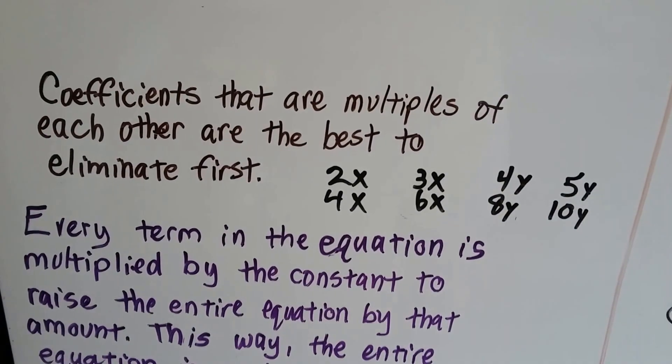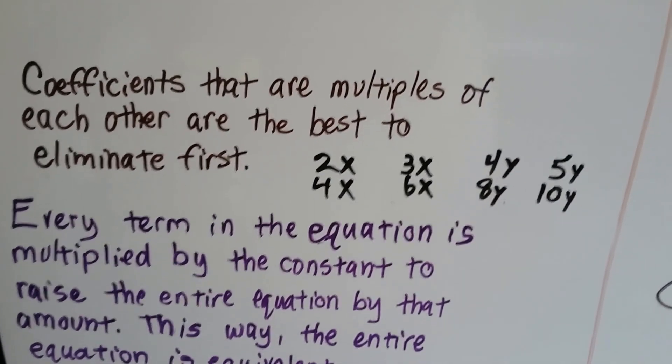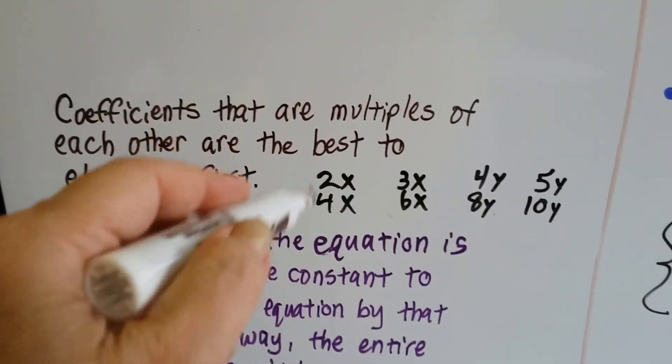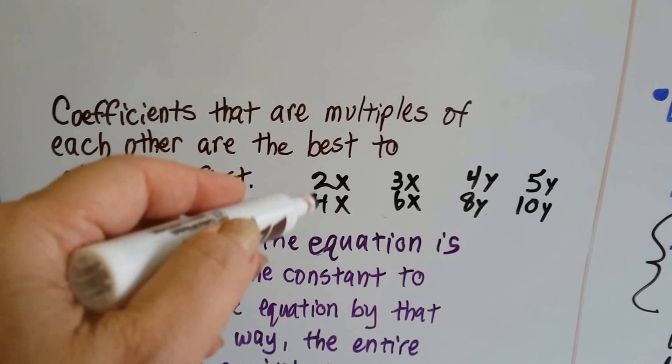Coefficients that are multiples of each other are the best to eliminate first. So if we had a 2x and a 4x, it would be best to eliminate the x first because we could just multiply it by 2.